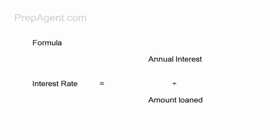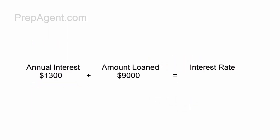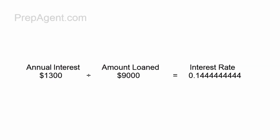So on the formula, interest rate equals the annual interest of $1,300 divided by the amount loaned of $9,000. $1,300 divided by $9,000 will give you 0.14444444 on your calculator, and you need to move the decimal point by 2, which gives you 14%.